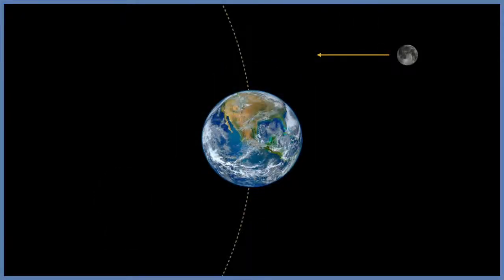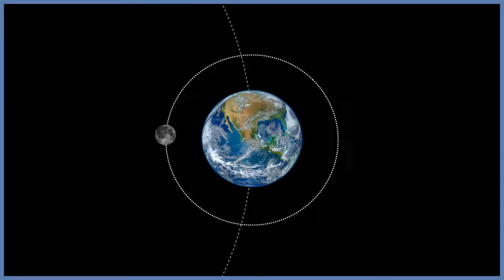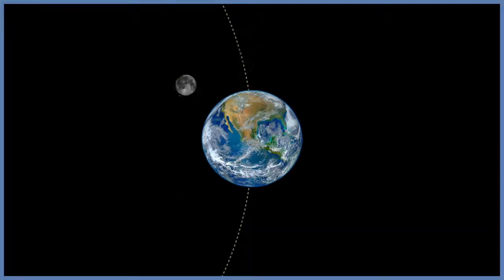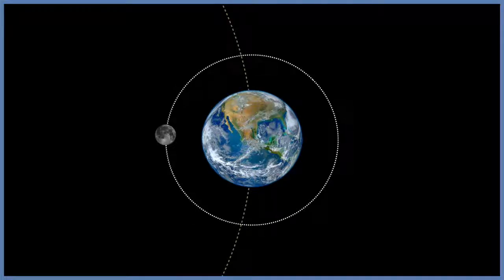Under the capture theory, a rocky body formed elsewhere in the solar system could have been drawn into orbit around the earth. This theory has a lot of weight to it, because not only would the early solar system have a lot of bodies in it, the earth is the largest planet in the inner solar system, so therefore it has the largest gravitational field.